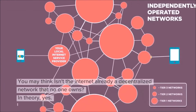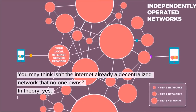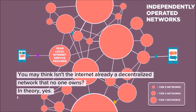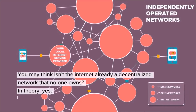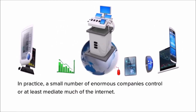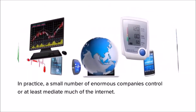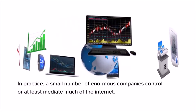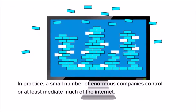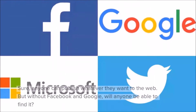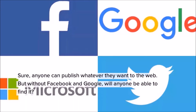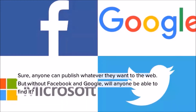You may think — isn't the internet already a decentralized network that no one owns? In theory yes, but in practice a small number of enormous companies control, or at least mediate, much of the internet. Sure, anyone can publish whatever they want to the web, but without Facebook and Google, will anyone be able to find it?